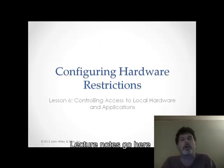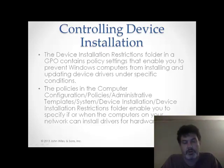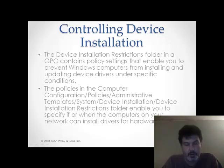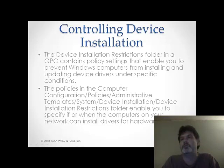First we're going to talk about configuring hardware restrictions for a number of reasons. Historically speaking, we've always associated removable hardware as kind of a security risk. There for a while we blamed things like USB devices and DVDs for allowing malware into our controlled environments. In the last lecture in Lesson 5 we talked about some ways that we could disable autoplay for our removable media to help reduce some of those security risks. But there are times when we look at removable media as more of a security risk than just introducing malware.